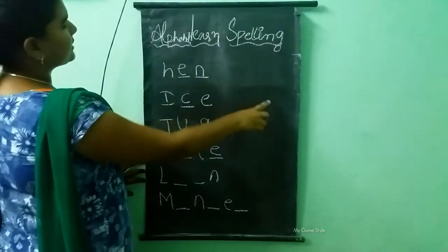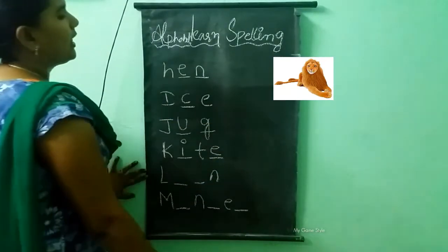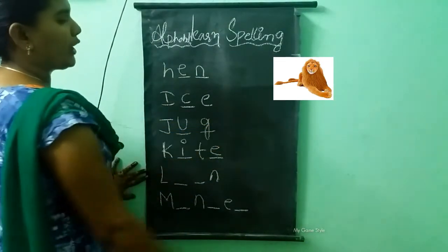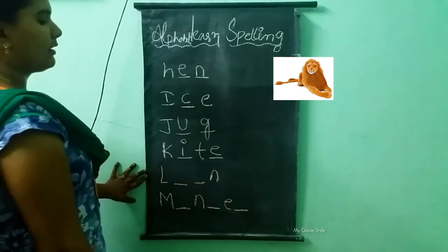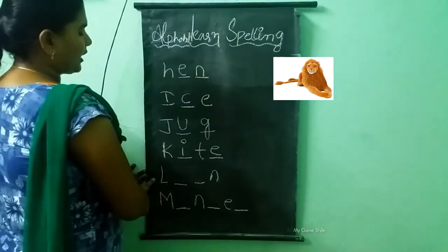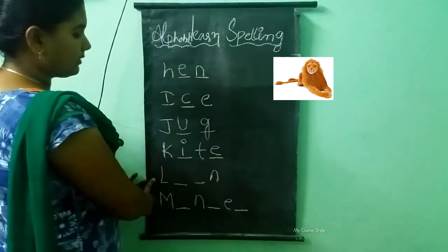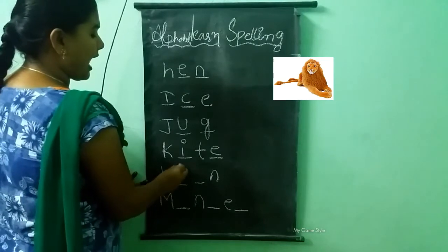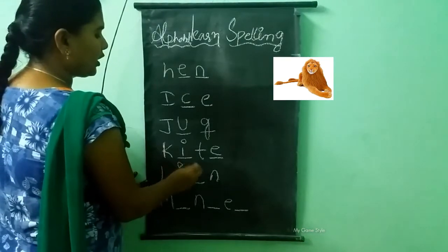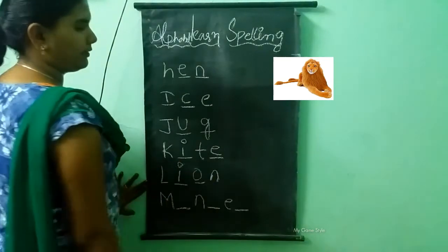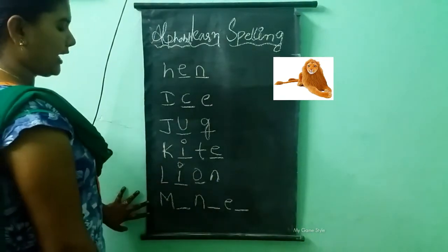What picture is this? This is a lion. What is the spelling of lion? L-I-O-N. Lion.